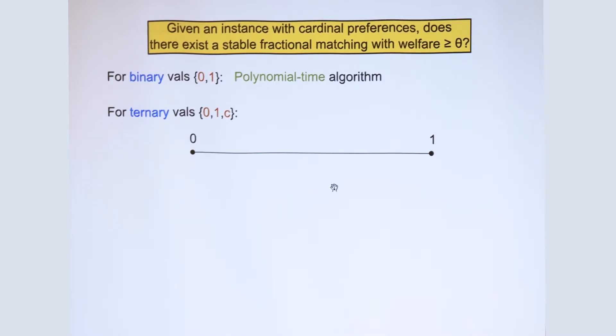So let me describe the results pictorially instead of giving the formal statements. So think of this line segment as the multiplicative approximation to the welfare of the optimal stable fractional matching. So the optimal stable fractional matching is sitting right here at the extreme. And if you are at half, you are getting 50% approximation.